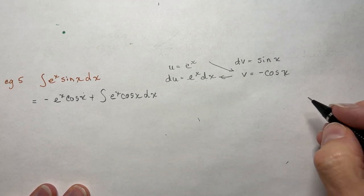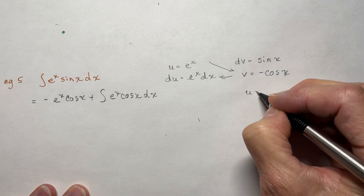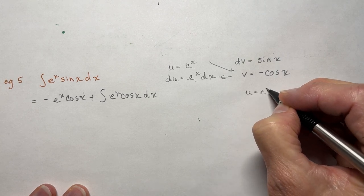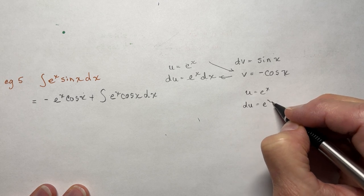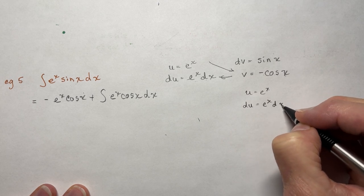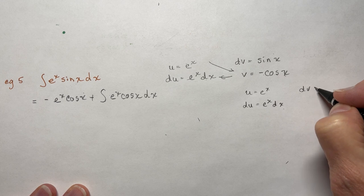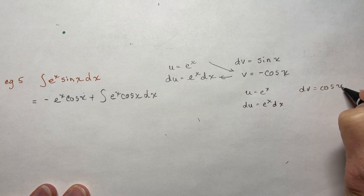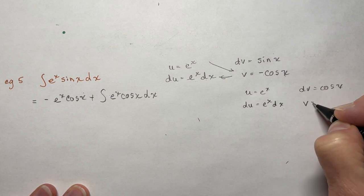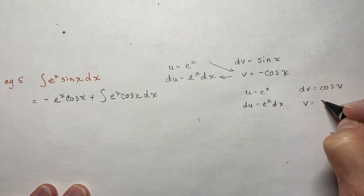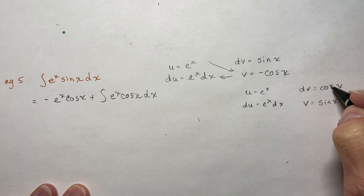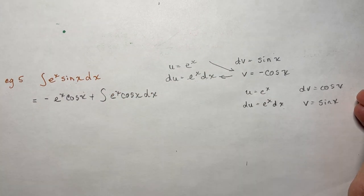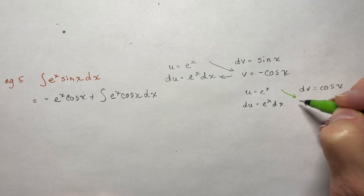So for this one, I'm going to let u be e^x again. And du is going to be e^x·dx. And dv is going to be cos(x). And the integral of cos(x) is sin(x), because the derivative of sin(x) is cos(x). I always like to check that, especially with the signs.